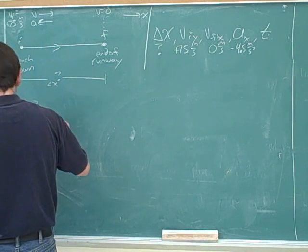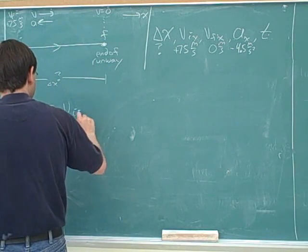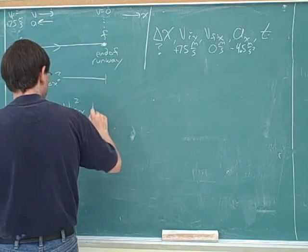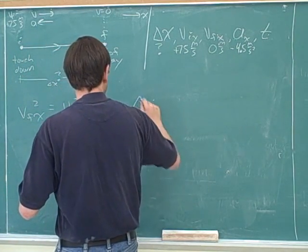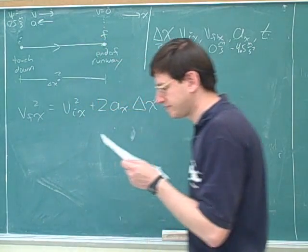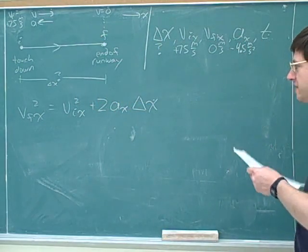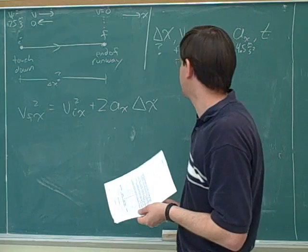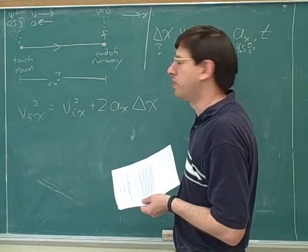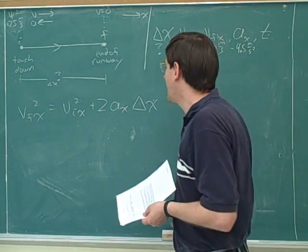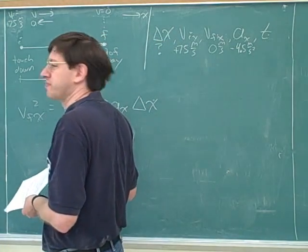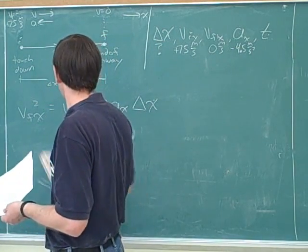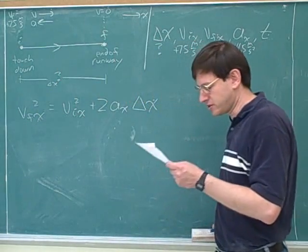So we have v final x squared equals v initial x squared plus 2a sub x delta x. As you can see, this is missing time, but it gives us a place to slide in all the numbers that we know, and it's going to tell us what delta x is. Since this is a one-dimensional problem, some people might leave out some of these x subscripts, but you're going to need these for two-dimensional motions, so I'll just go ahead and put those in.